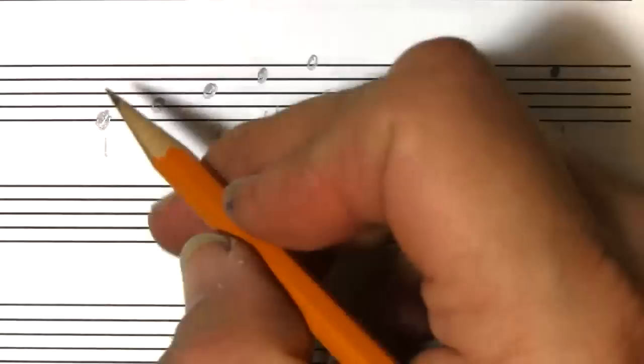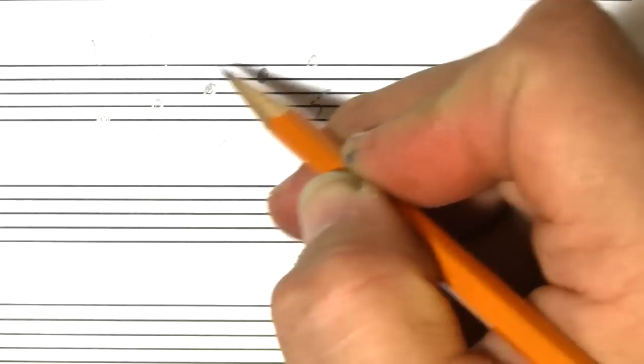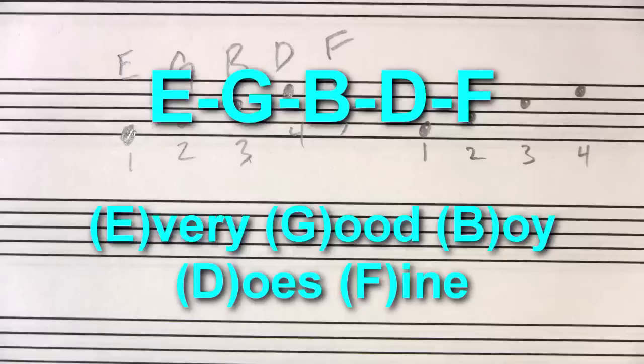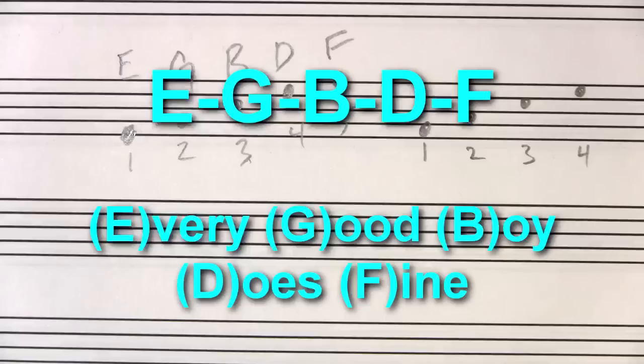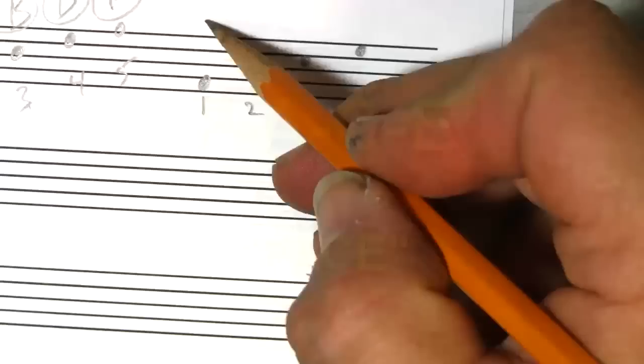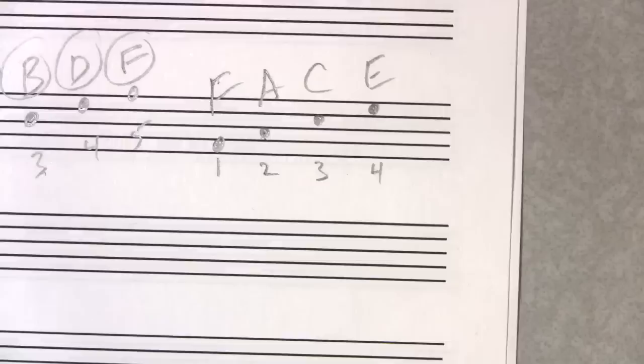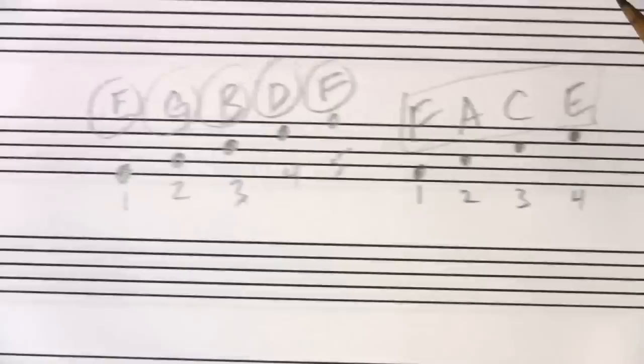The lines and the spaces are what we base everything on when writing music. The notes on the lines are E, G, B, D, and F. You know the old sentence: every good boy does fine — that's how we remember that. And on the spaces it spells the word FACE: F, A, C, E.